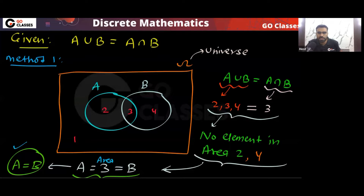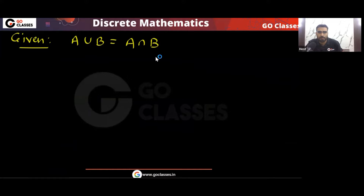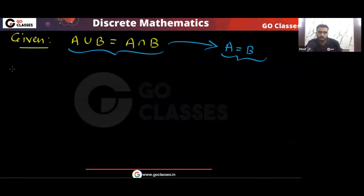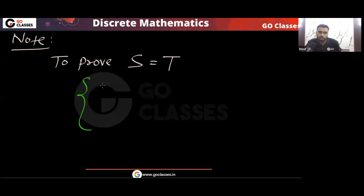So finally we can say A is equal to B. That was method number one — very simple. Now let me tell you method number two. To prove set S equals set T, you need to show that S is a subset of T and T is a subset of S. These two things you need to do.